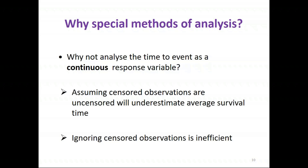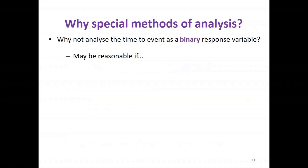We could potentially assume that censored observations are uncensored and just incorporate time as a continuous response variable, but this would underestimate the average survival time. We could alternatively ignore those censored observations, but that throws away valuable information and is inefficient. Another feature of time-to-event data is that it's often very skewed, so standard methods for continuous variables may not be appropriate anyway.